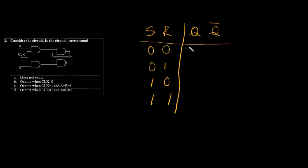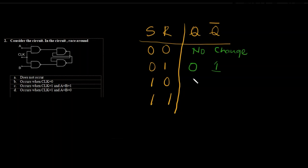When S and R is 00, output is no change — Q and Q-bar remain the same. When S and R is 01, no matter what Q was, it resets to 0. If S and R is 10, no matter the previous Q value, the next output will be set. And when 1,1, it is indeterminate. Hence, race around condition does not occur in my SR latch.